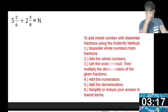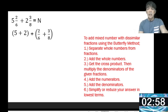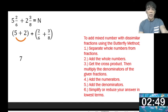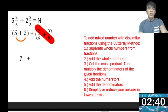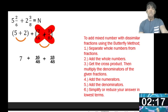Let us now have an example with mixed numbers. These are the steps for adding mixed numbers with similar fractions using the butterfly method. First, separate the whole number from the fraction. So we separate 5 and 2, giving us 2 over 6 plus 3 over 8. Next, add the whole numbers: 5 plus 2 equals 7. Then add the fractions using the butterfly method. Get the cross product: 2 times 8 equals 16, and 3 times 6 equals 18. Multiply the denominators 8 and 6 to get 48, which becomes the denominator of both fractions.